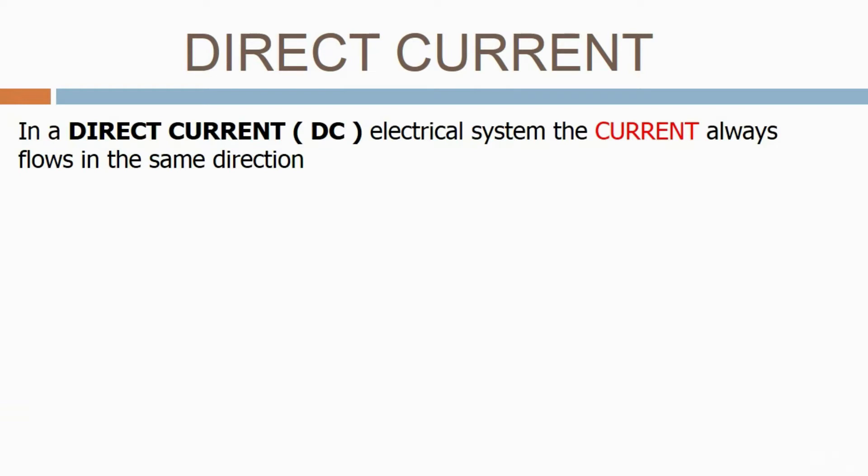In a direct current or DC electrical system, the current always flows in the same direction. If we plot out the graph, it will just be a horizontal line over time.